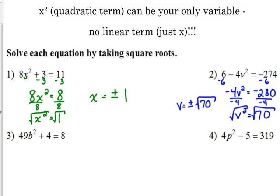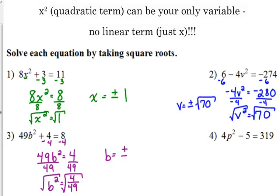49b squared plus 4 is equal to 8. Move the 4. Divide by 49. b squared is equal to 4 over 49. That is not a fraction. It doesn't simplify. When we take the square root of both sides, don't forget the plus or the minus. And when you take the square root of something like that, of a fraction, you can take the square root of the top. So that's 2. And you can take the square root of the bottom. That's 7. So plus or minus 2 over 7 is our answer.